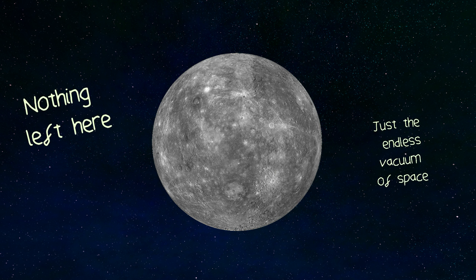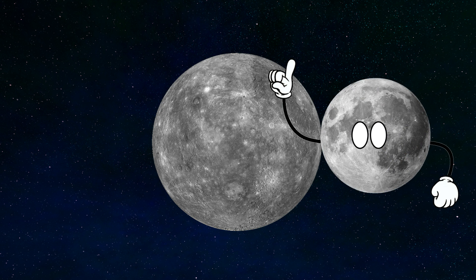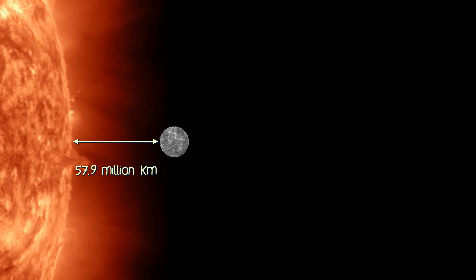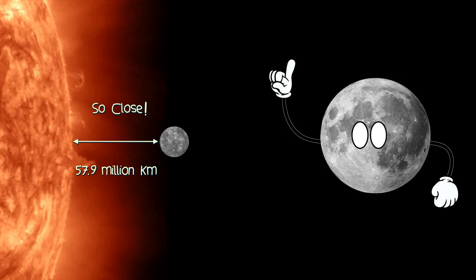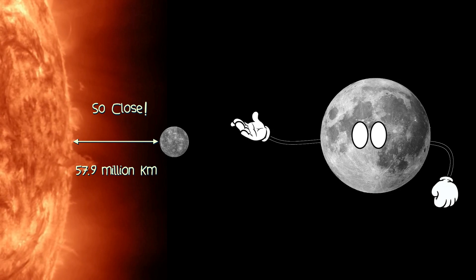But let's assume there was some stuff going spare. A Mercurian moon could never have been formed, because Mercury is too close to the sun. Which brings me nicely to the next scenario for how planets get moons.